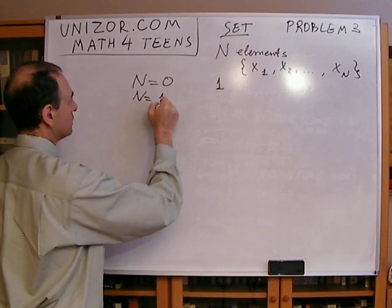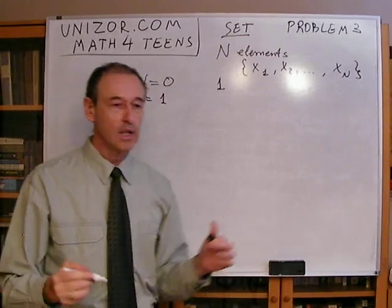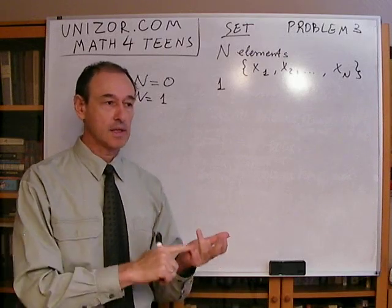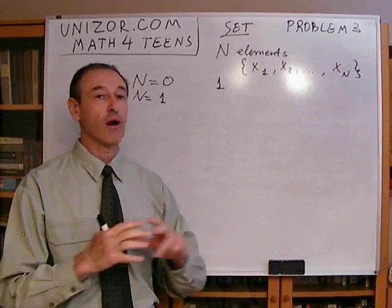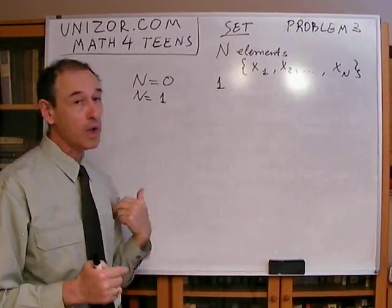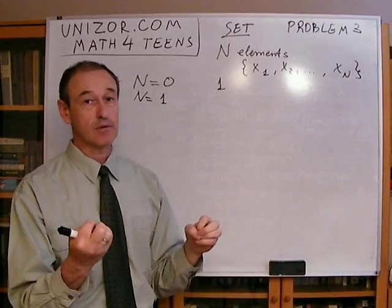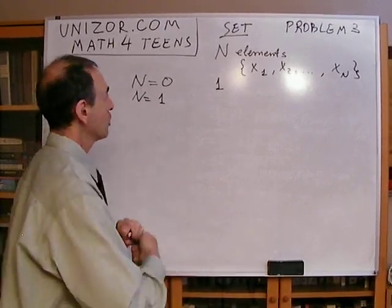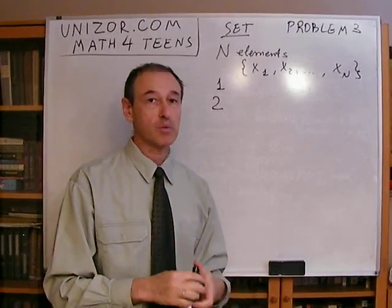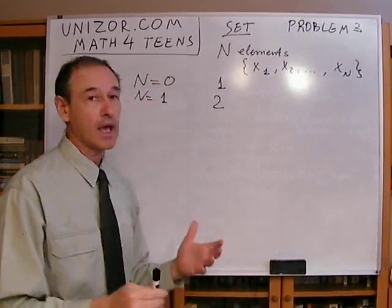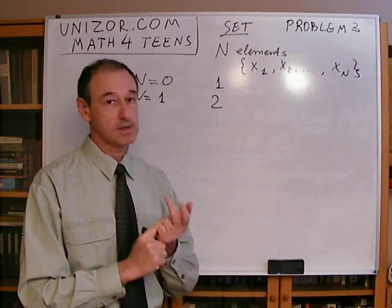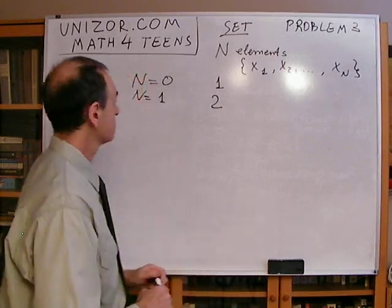Let's say n is equal to one, so we have only element x1. We can start with two trivial subsets: one is empty, and another is the whole set. Empty and the whole set are always there — always two subsets. In case of n equals zero they are the same, but in case of n equals one, it's already two different sets: one is empty, and another is the whole set, which is x1. So we have two, and nothing else.